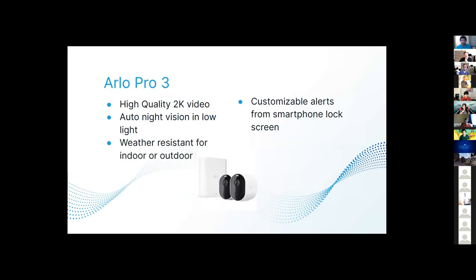This one's the Arlo Pro 3. It shoots high quality 2K video, has auto night vision in low light, weather resistant for indoor and outdoor use, and customizable alerts from your smartphone lock screen. My favorite thing about this is the weather resistant aspect. I like to save money on my systems, so I'd rather them not be breaking due to something stupid like the weather. If you're going to have a security camera outside, it better be weatherproof.